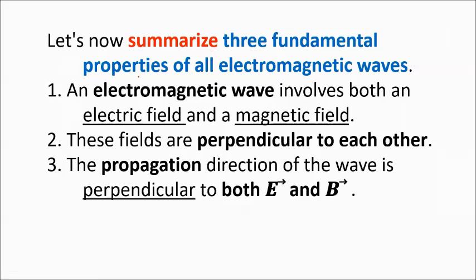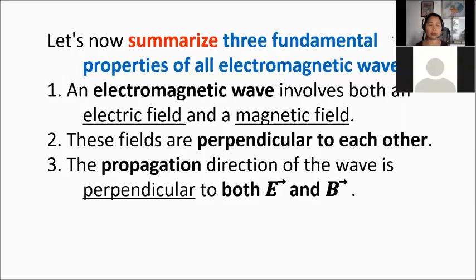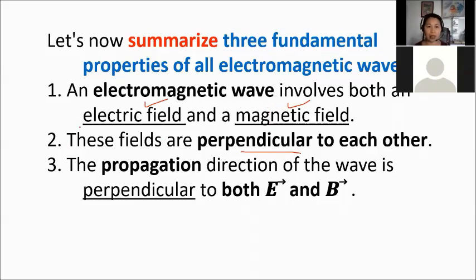Let us summarize the three fundamental properties of all electromagnetic waves. First, an electromagnetic wave involves both an electric field and a magnetic field, and these fields are perpendicular to each other. Second, both fields are perpendicular to the propagation or direction of the wave. These are the important fundamental properties of an electromagnetic wave.